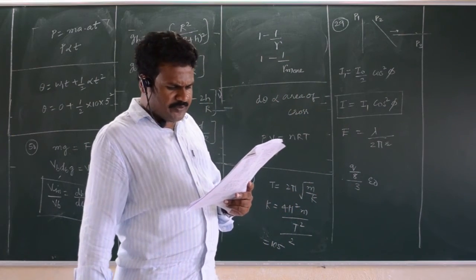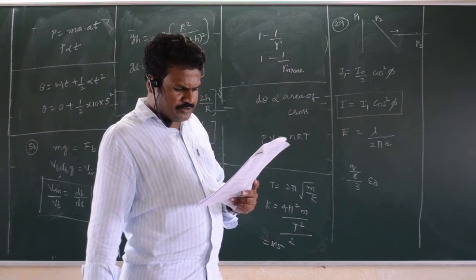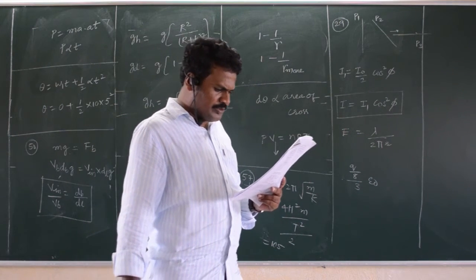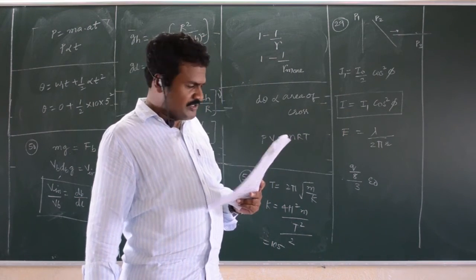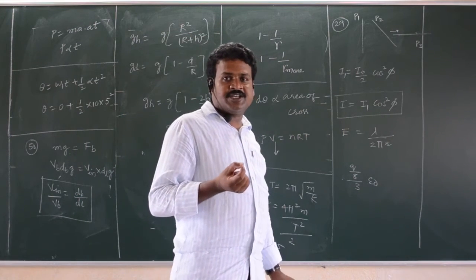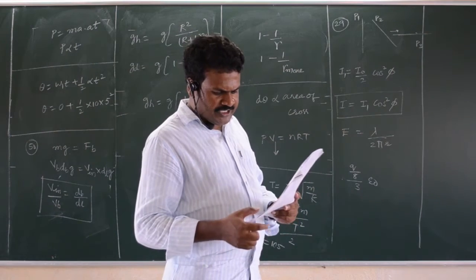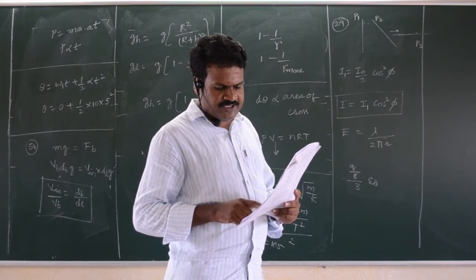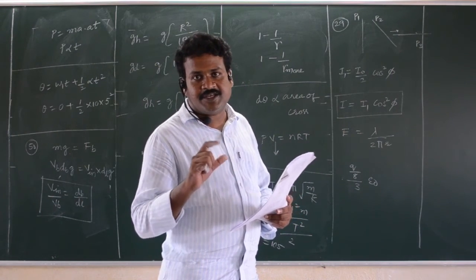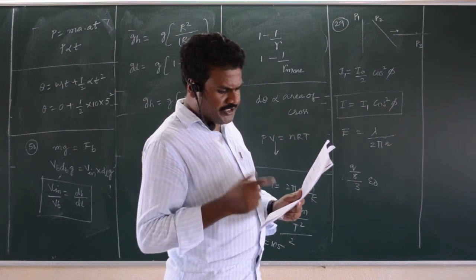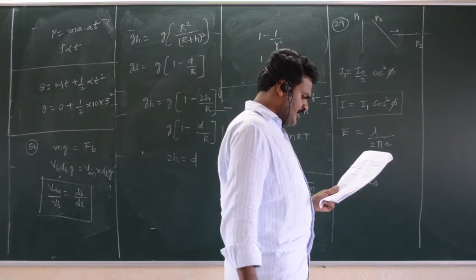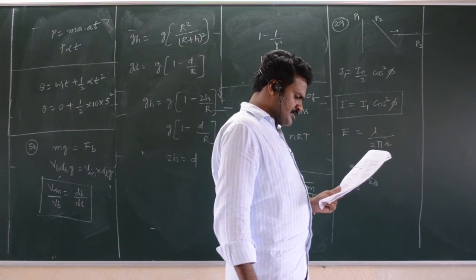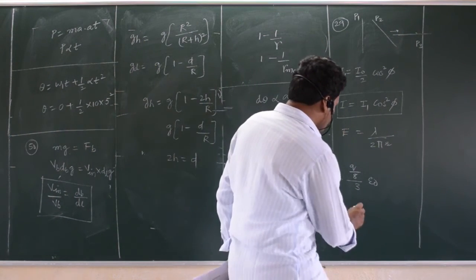The electric field lines of left half has twice the separation on those on the right half. If the magnitude of field at a is 40, see when electric field lines are closer, electric field intensity is more. So, at a it is 40 means at b it is definitely 20 because exactly separation is half. So, 20 into 20 mu c will be the answer.